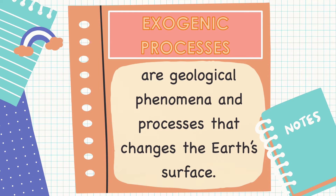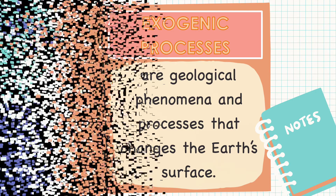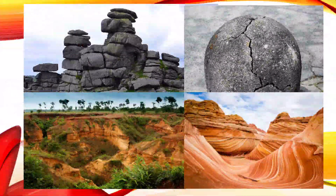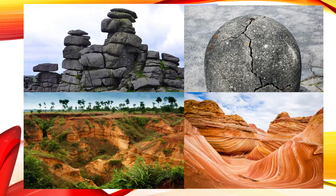Exogenic processes are genetically related to the atmosphere, hydrosphere, and biosphere. These are examples of how exogenic processes change the surface of our planet.